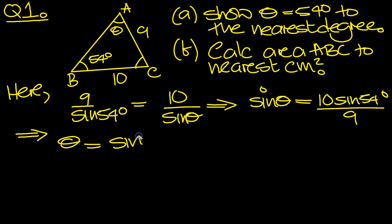So that tells us then what theta is. It will be shift sine, or arc sine, sine to the minus 1, of 10 sine 54 degrees over 9.